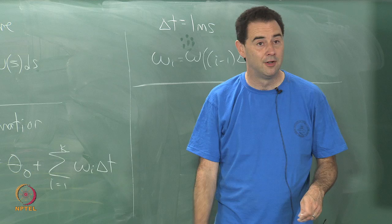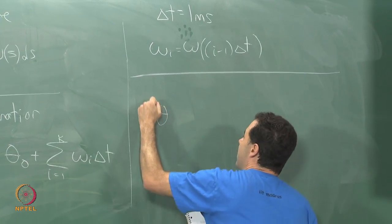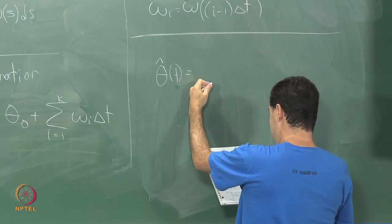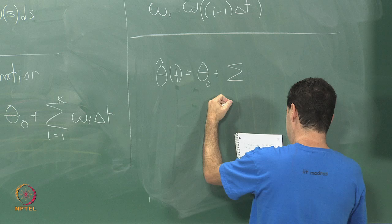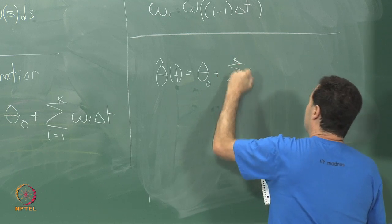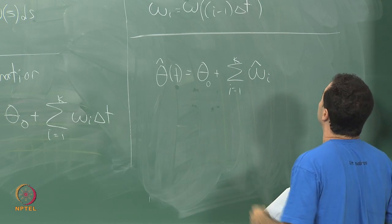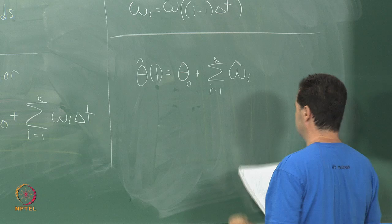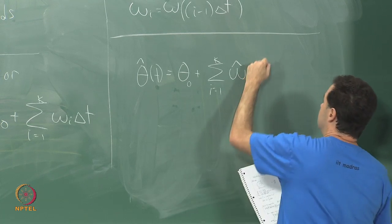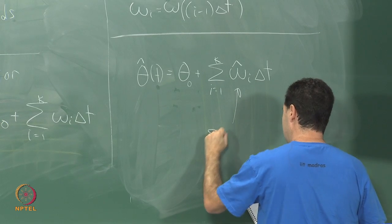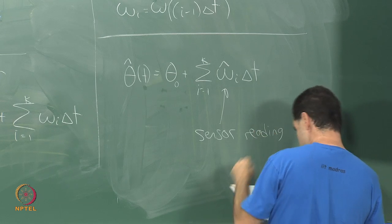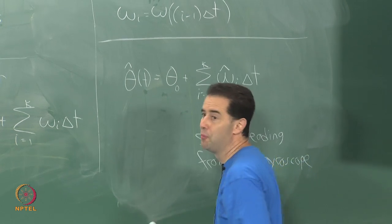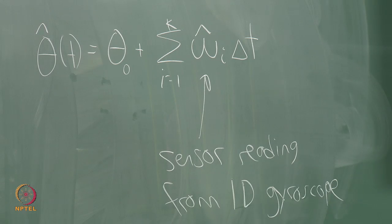So what I'm really trying to do is construct some theta-hat at a given time. That will be theta-0 plus the sum from i=1 to k of omega-hat_i times delta-t, where the hat indicates it's an estimate — measured by a sensor, probably not correct, but the best guess I have. This is the sensor reading from a one-dimensional gyroscope that reports a scalar quantity: the yaw in radians per second.